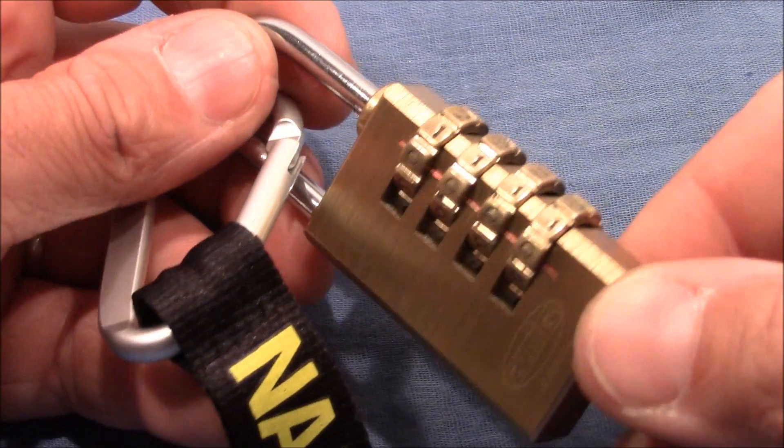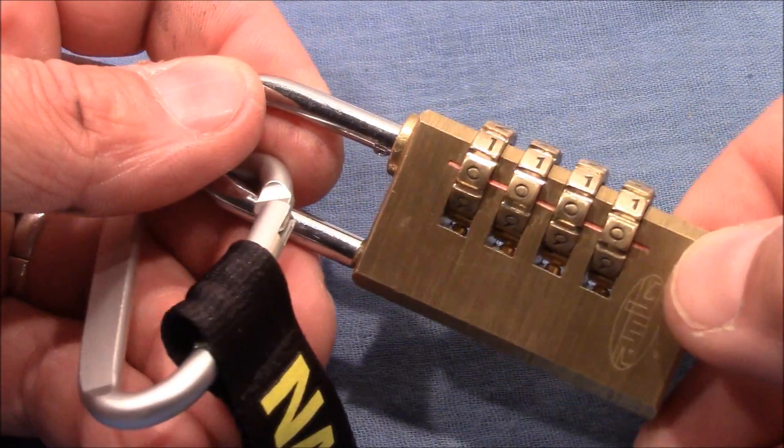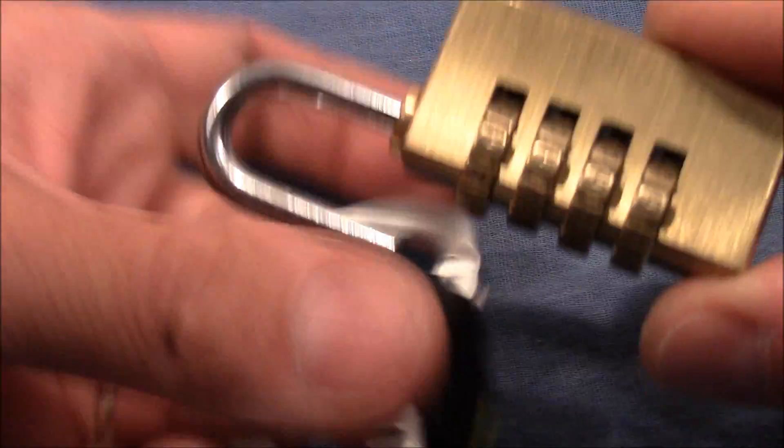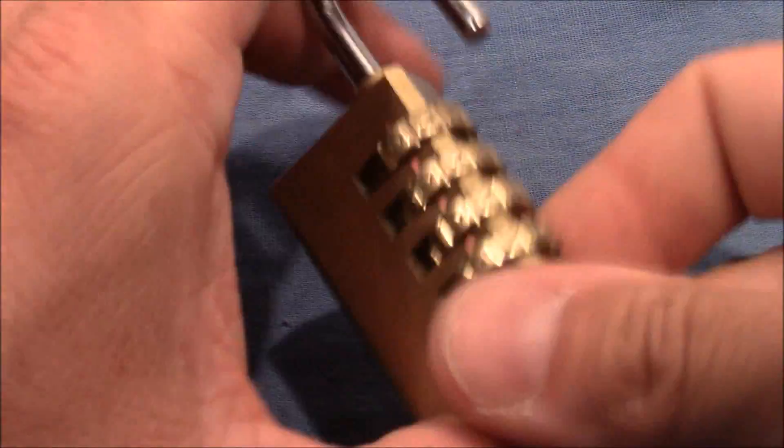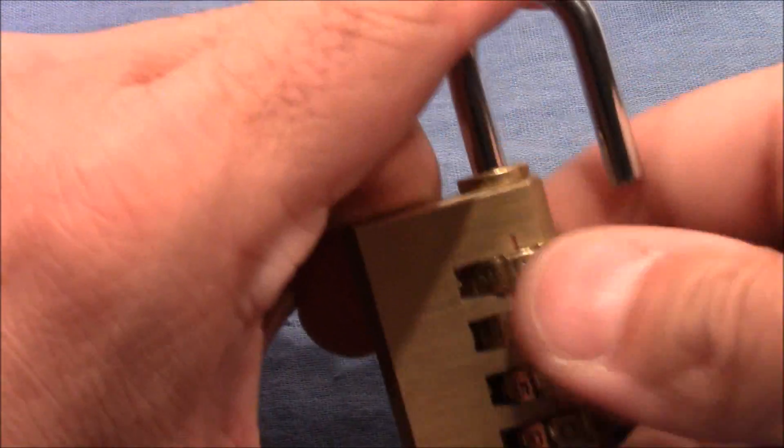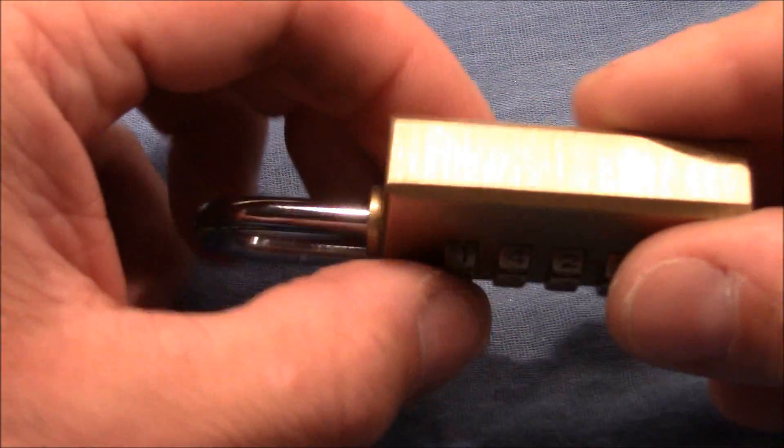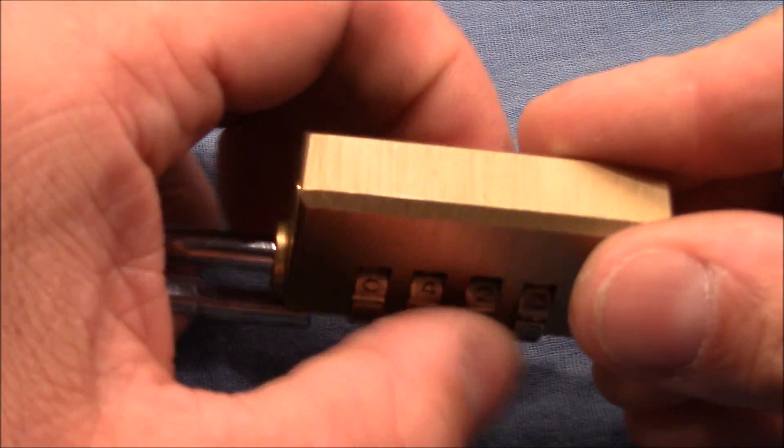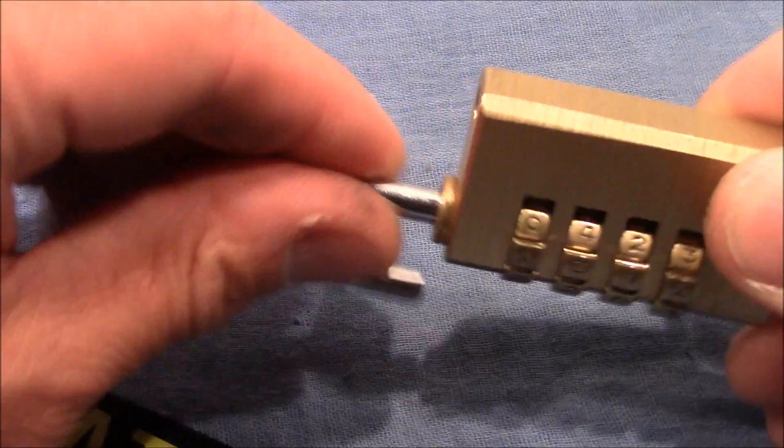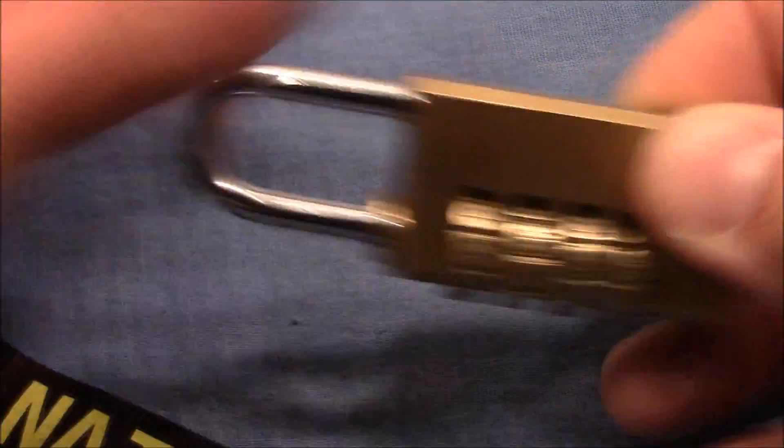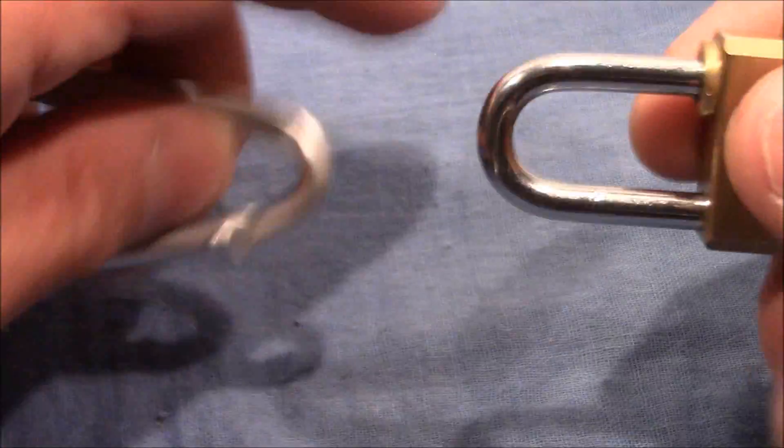But now I want to decode this lock without applying the special knowledge, give you a general approach what to do. So shuffle the wheels, just make sure that a number is entered and not in between two numbers. Close it again, shuffle the wheels and start with the fun part.